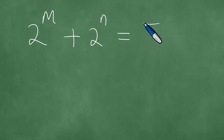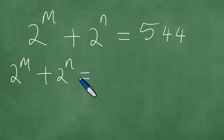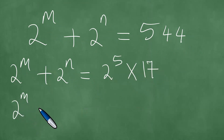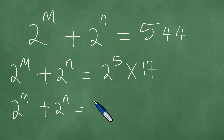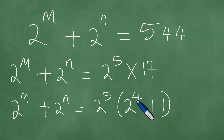We have 2 to the power m plus 2 to the power n equals 544. We rewrite 544 as 2 to the power 5 times 17. Then 17 is the same as 2 to the power 4 plus 1, since 16 plus 1 equals 17.